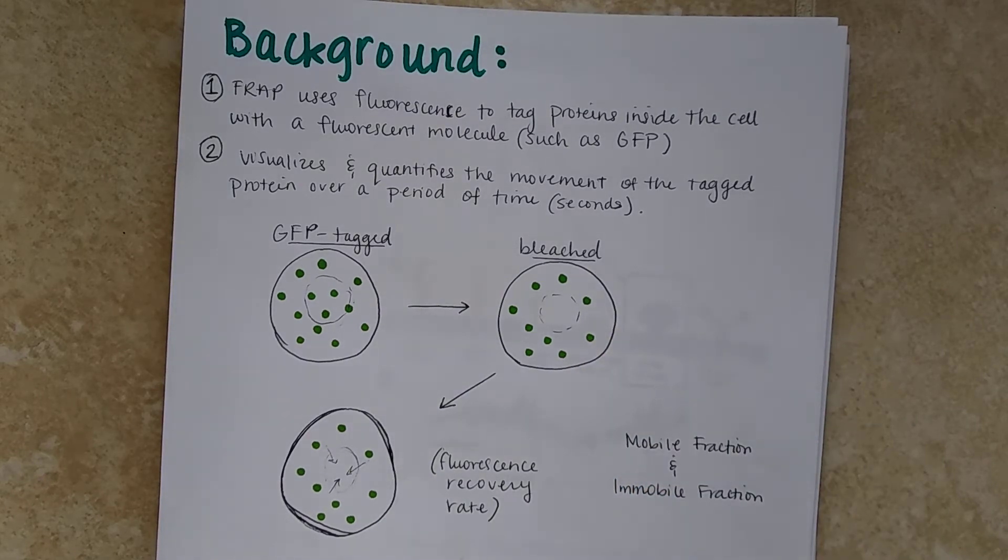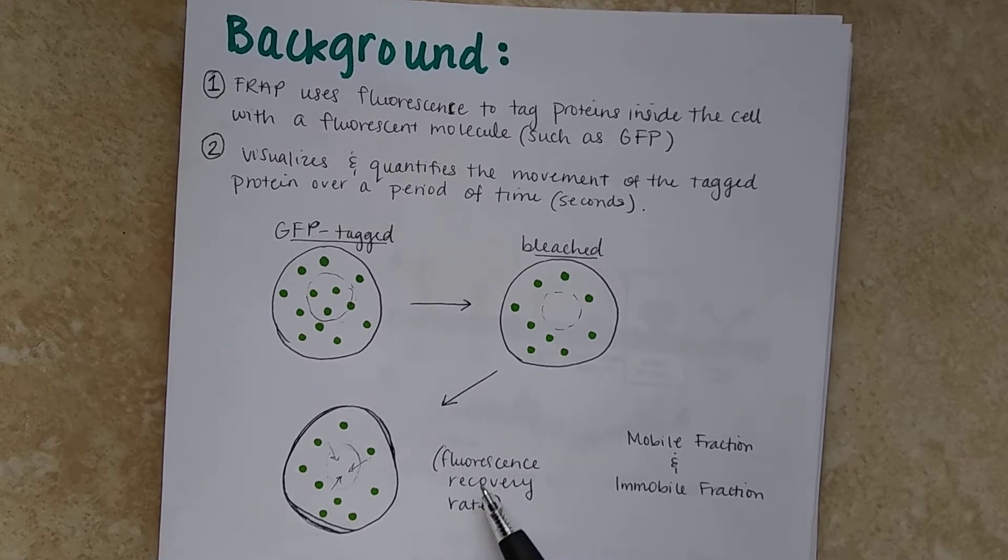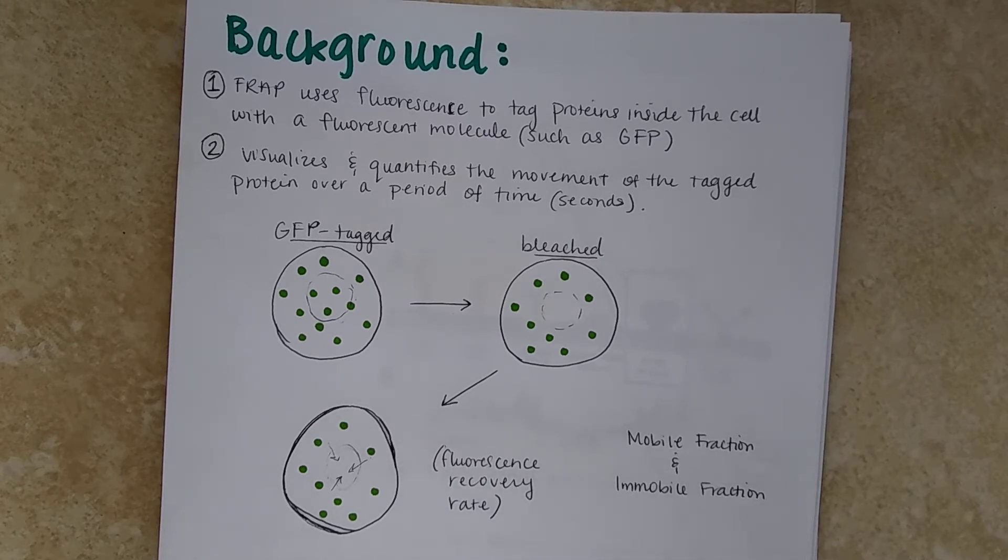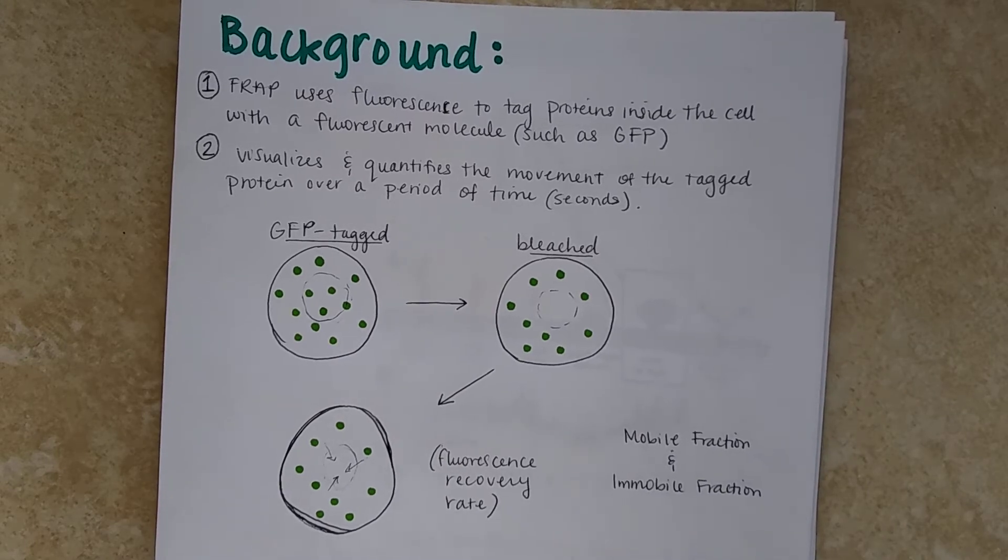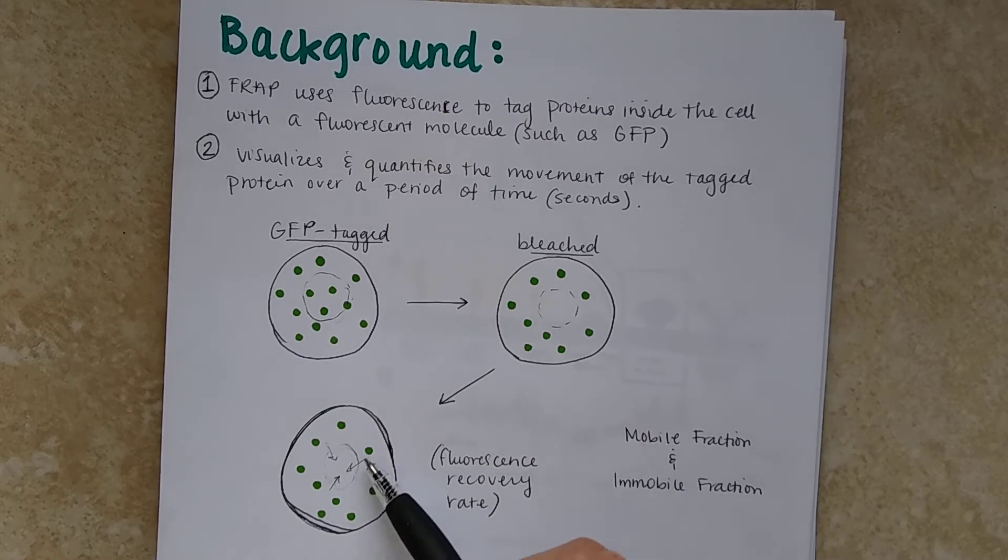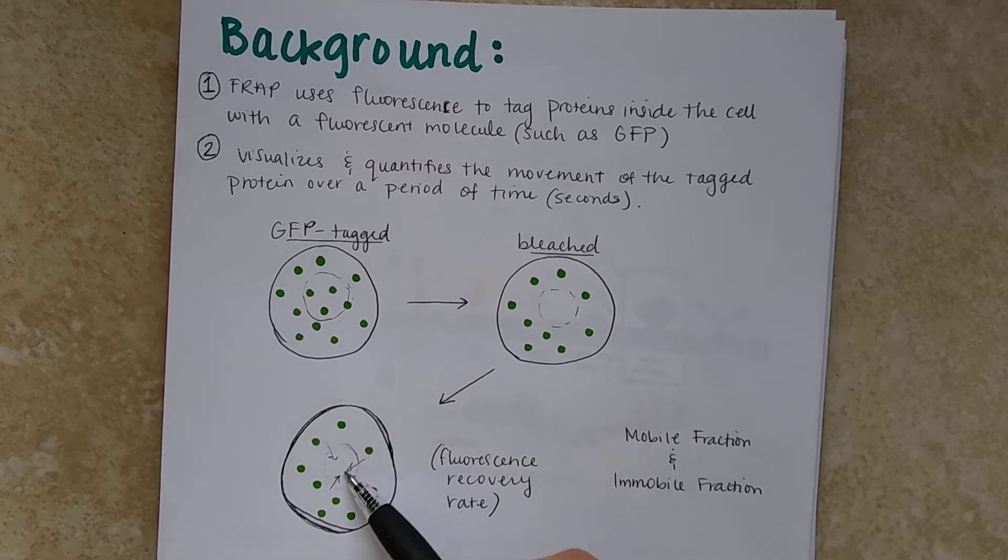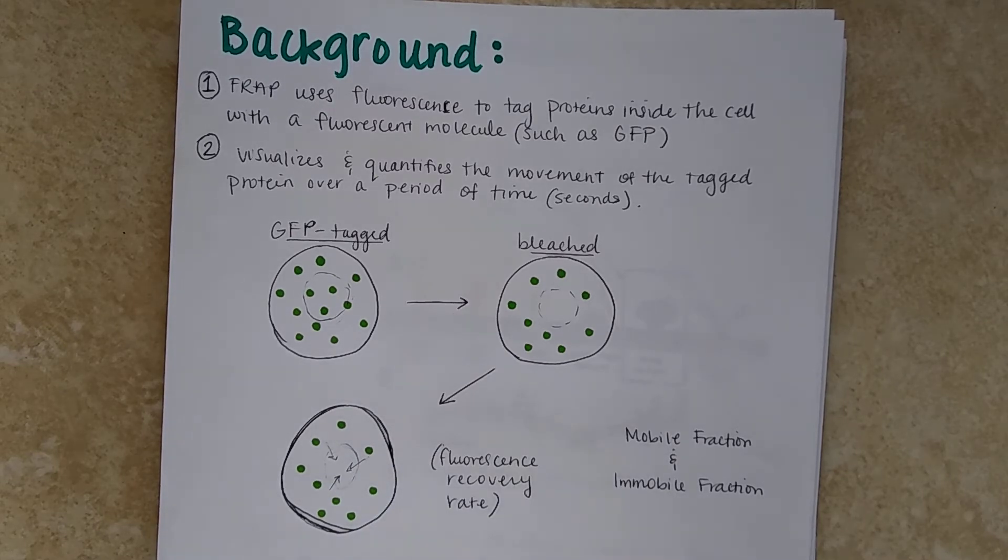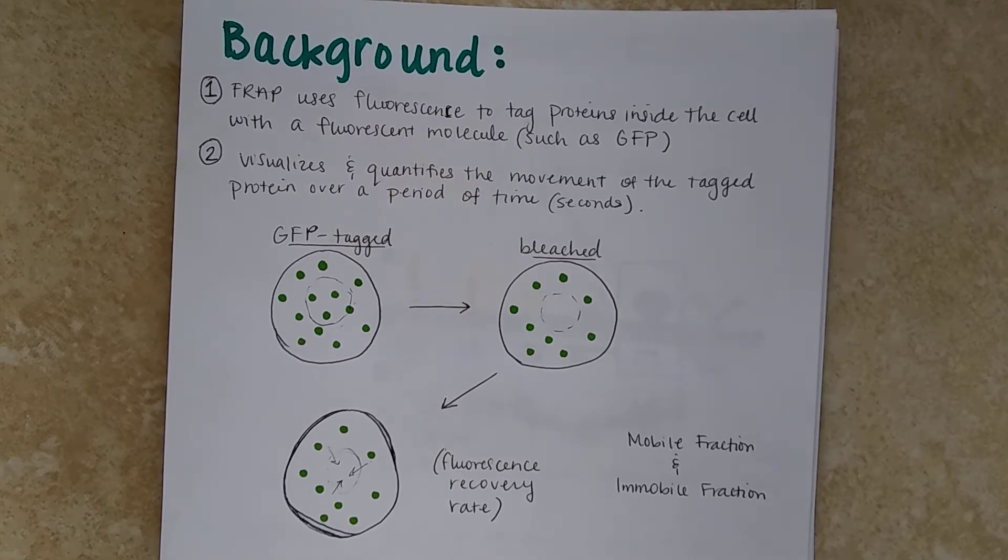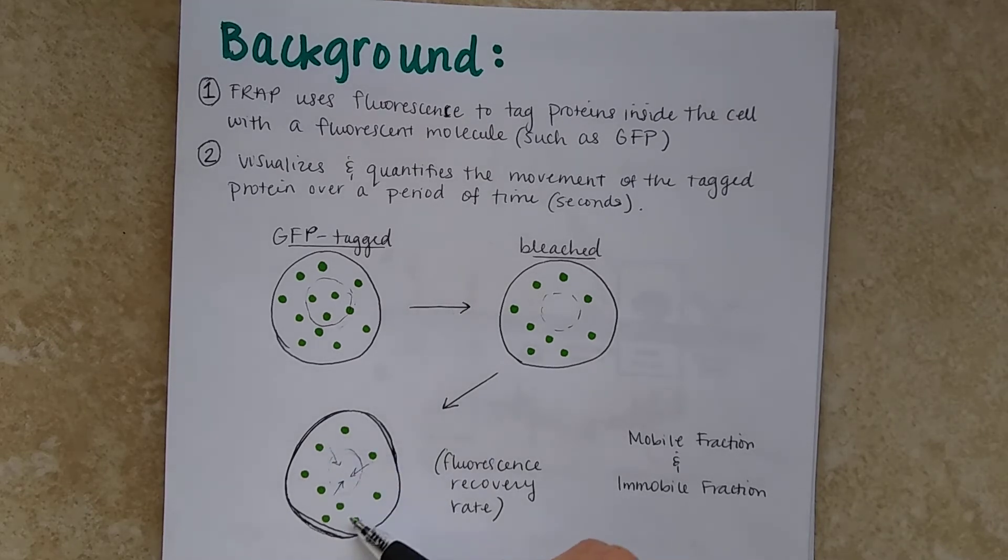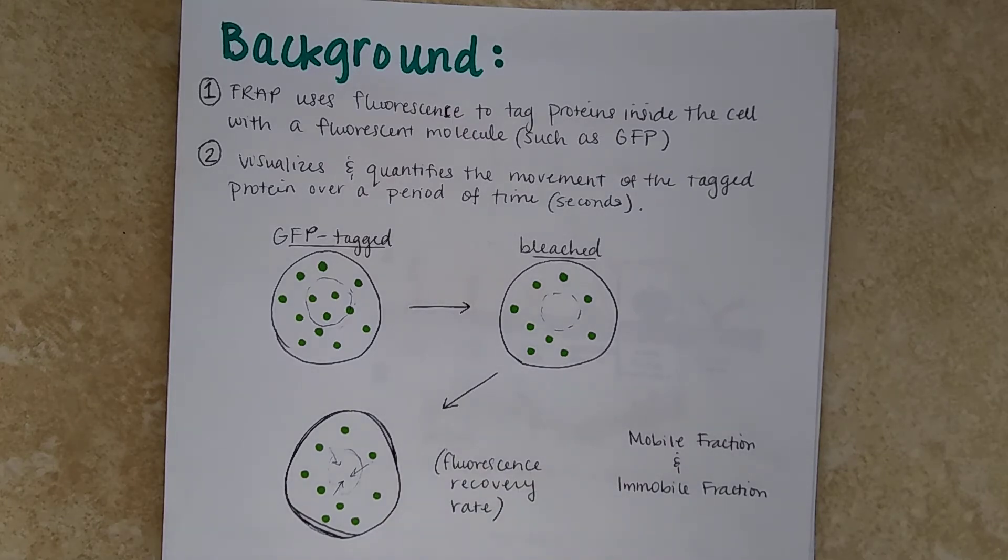And so whenever we are looking at the fluorescence recovery rate, that refers to the rate that it takes to recover the fluorescence. So this is composed of mobile fractions and immobile fractions. The mobile fraction will be referring to the unbleached area, indicated by the green, that will be diffusing towards the region of interest, and that contributes to the recovery of the fluorescence. And the immobile fraction refers to the unbleached region molecules that do not contribute to the fluorescence recovery of the region of interest.